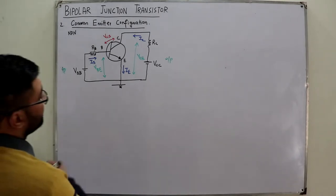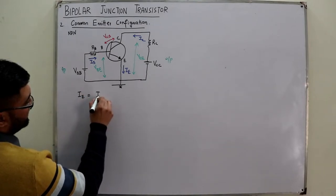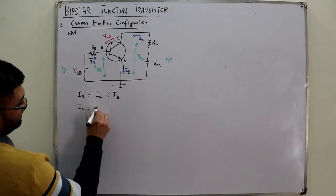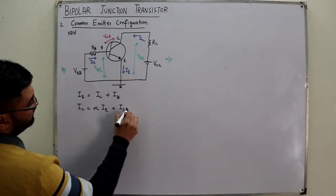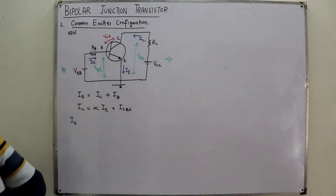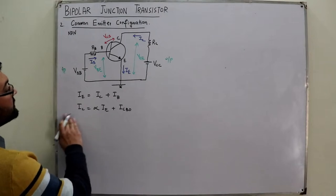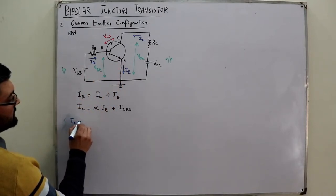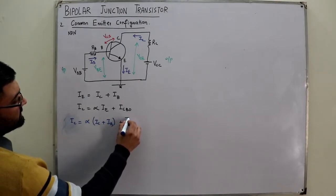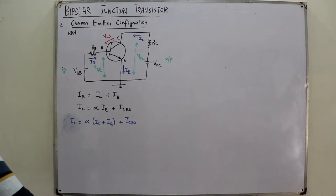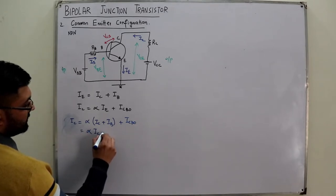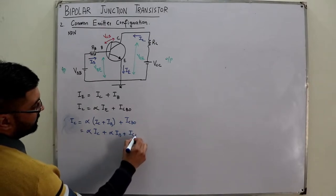The current relation is IE = IC + IB. Also, IC = α·IE + ICBO. Substituting IE = IC + IB into this expression, IC becomes equal to α·(IC + IB) + ICBO, which expands to α·IC + α·IB + ICBO.